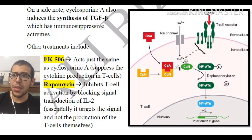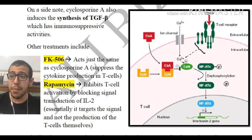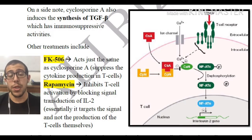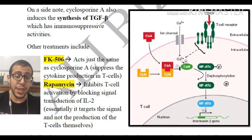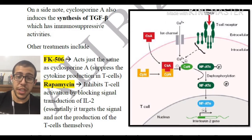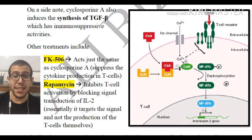On a side note, cyclosporine A also induces the synthesis of TGF-beta, which has immunosuppressive activities. So it inhibits the immune response through two different methods: first, NFAT is not expressed so interleukin-2 does not produce lymphocytes; and second, it induces TGF-beta, which has additional immunosuppressive effects.